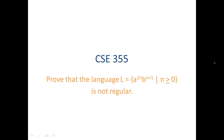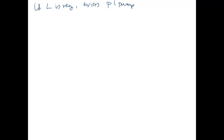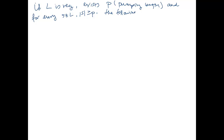So let's remember what the pumping lemma for regular languages says. It says: if a language is regular, then it has some number p, which is the pumping length, so that for every string that's in the language with length at least p, there exists some decomposition of this string into the parts x, y, and z, such that the following conditions hold. If L is regular, there exists p, the pumping length, and for every s in the language with length of s at least p, there exists a decomposition of s into parts x, y, and z satisfying the following conditions.